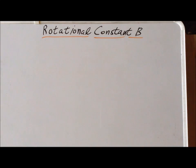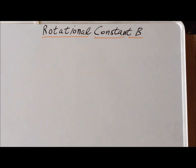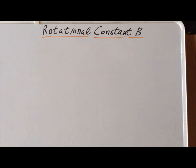Hello. In this video, we are going to be using the rotational constant B for hydrogen to determine, indirectly, the bond length of hydrogen.